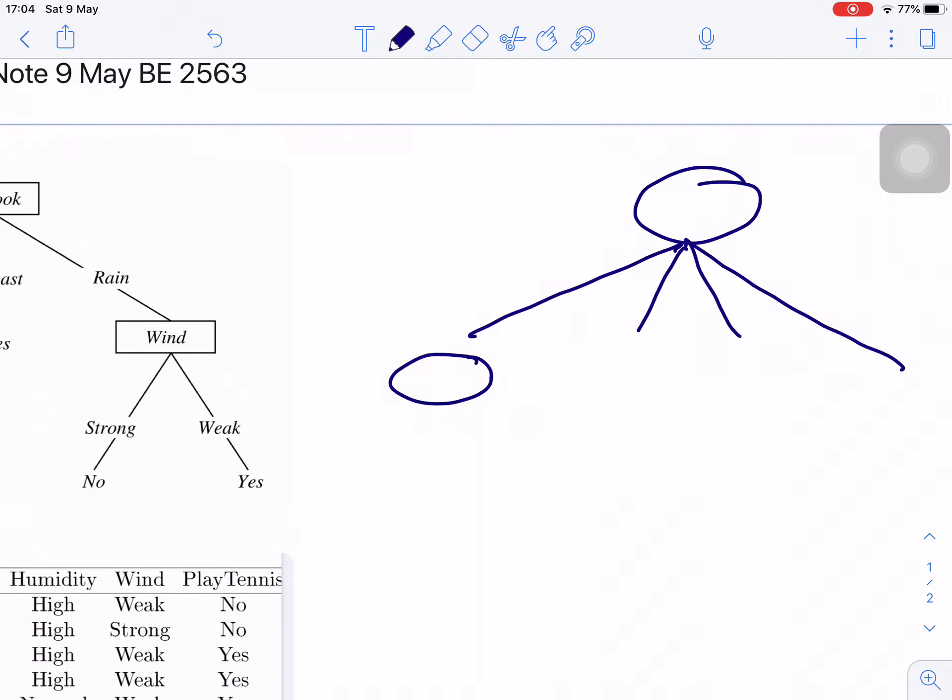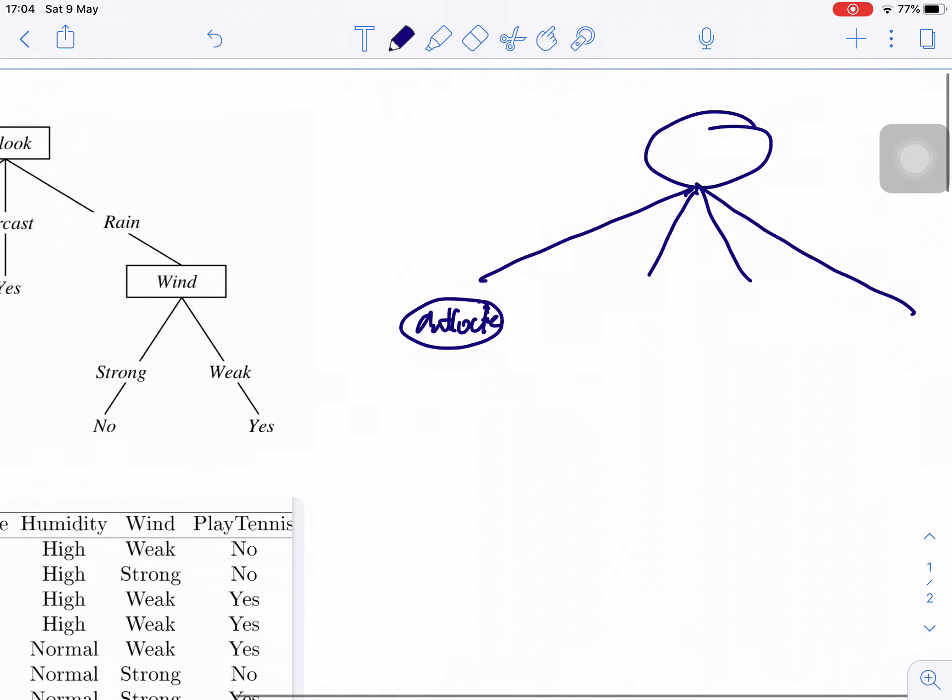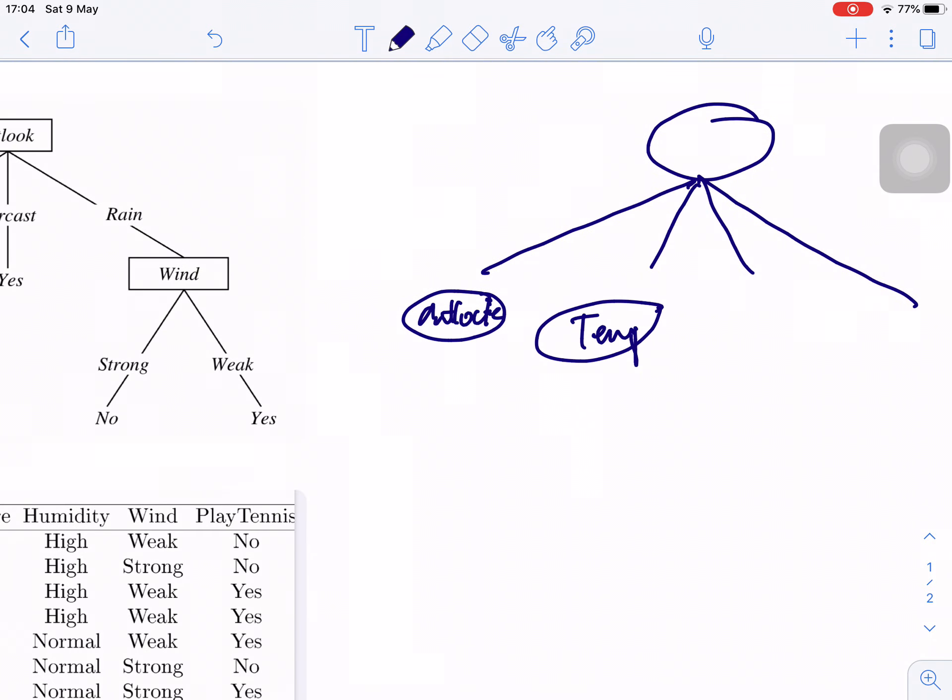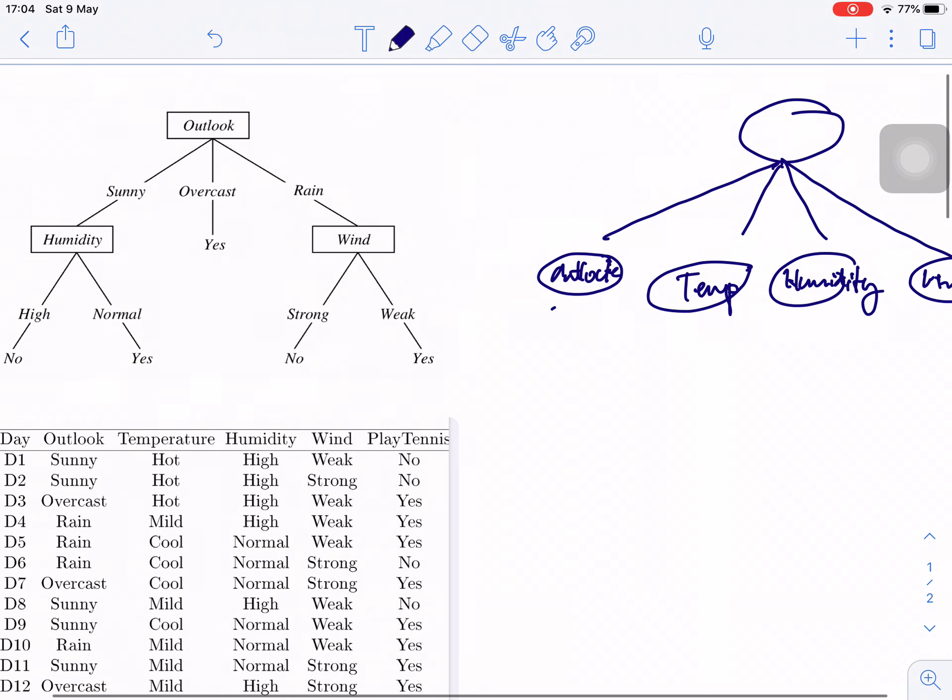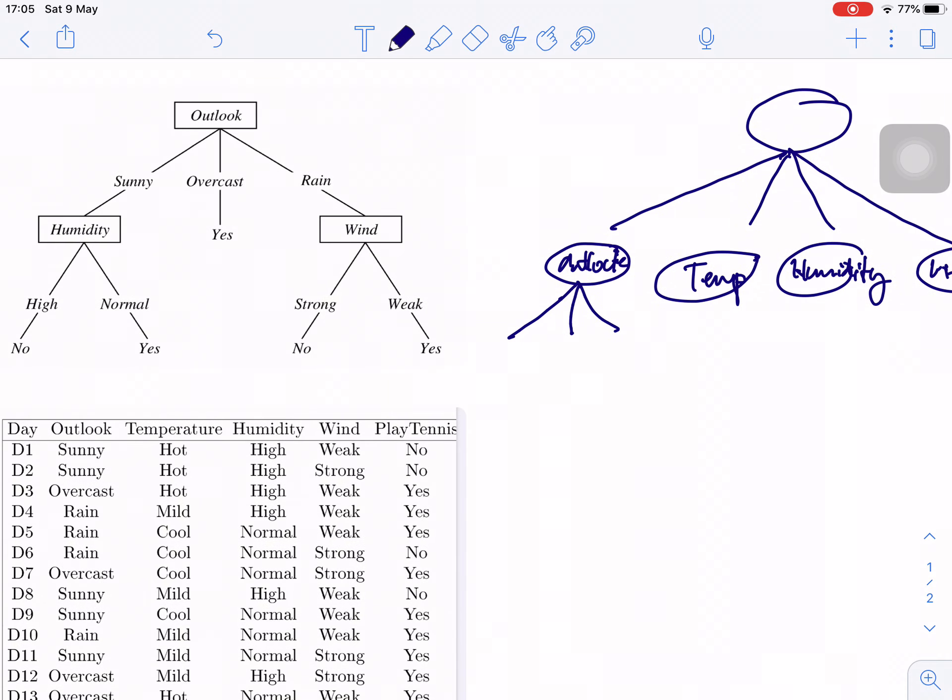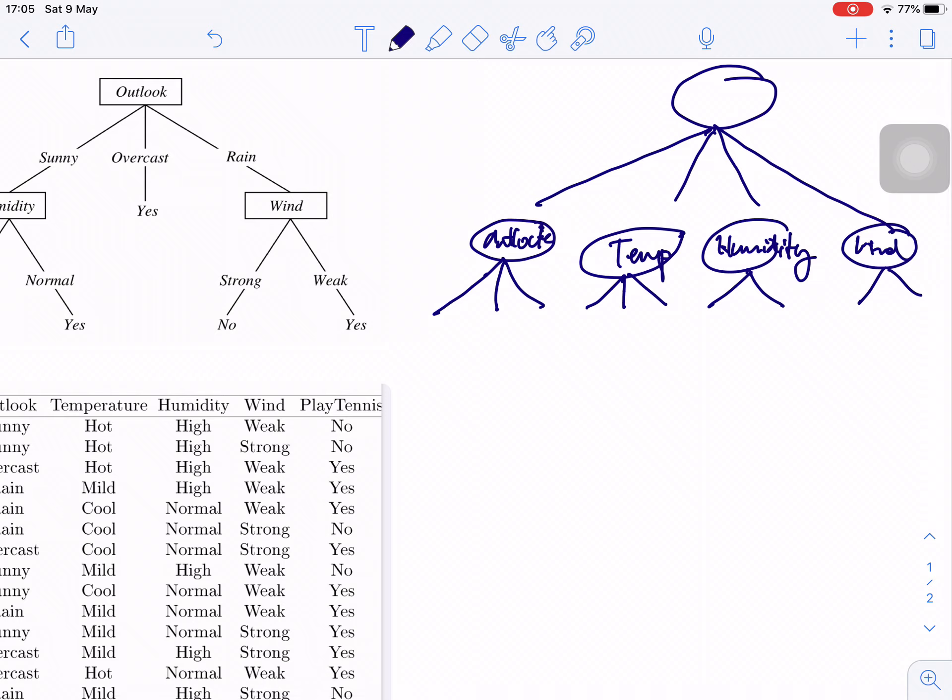Like you can put outlook in the root node of the tree. You can put the temperature, humidity, and wind as the root node of the tree. And for each tree, for outlook you have three links, right? For the temperature, you have three also. For the humidity, you have two. And for the wind, you have two. So this is the first starting point of four trees, right?